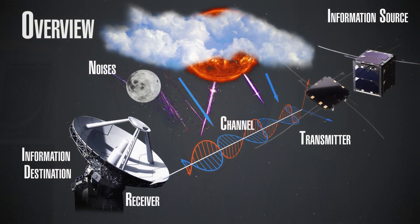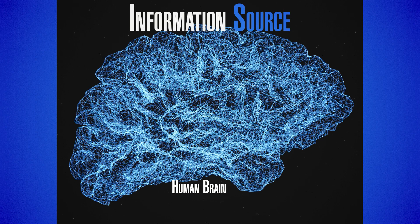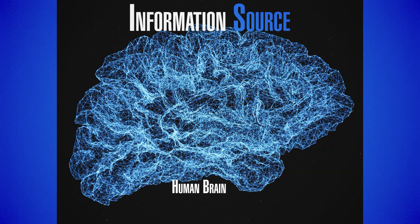That is basically the general scheme of a communication system. Let's look at each one of its elements. The information source is a device which produces the message to be communicated. These messages may be of different types.